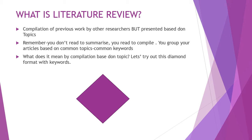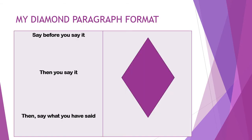I use a diamond paragraph format. One diamond symbolizes one paragraph. You begin at the top sharp point — say before you say it. In the middle broad section — you say it, elaborating the points. At the bottom sharp point — you say what you have said. So the structure is: introduce, elaborate, conclude within every single paragraph.